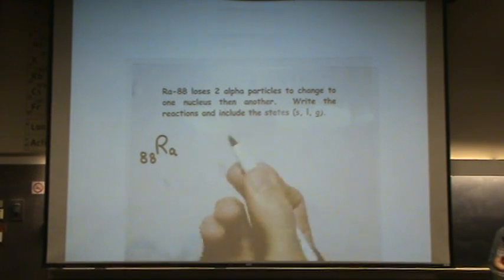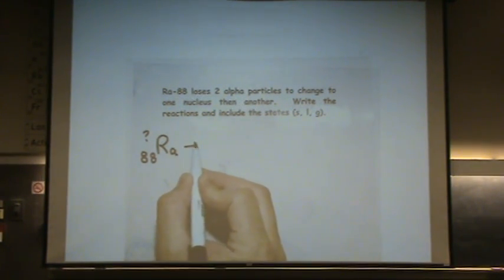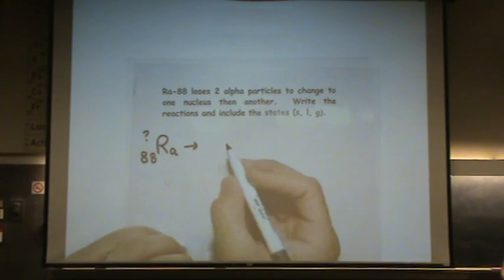And it doesn't specify the nucleus, so we're just not specifying it. But it could be anywhere in the range of 226. It doesn't specify the number of neutrons. But this is interesting. It decays with an alpha particle.